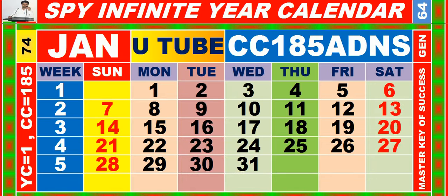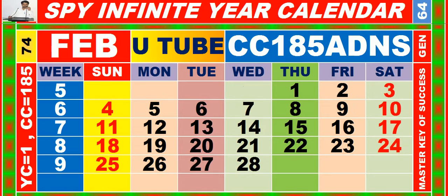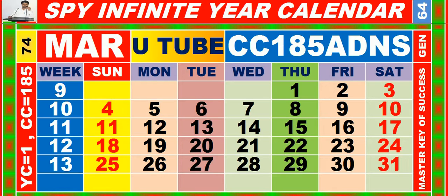Calendar for the month of January having calendar code equal to 185. Calendar for the month of February having calendar code equal to 185. Calendar for the month of March having calendar code equal to 185.